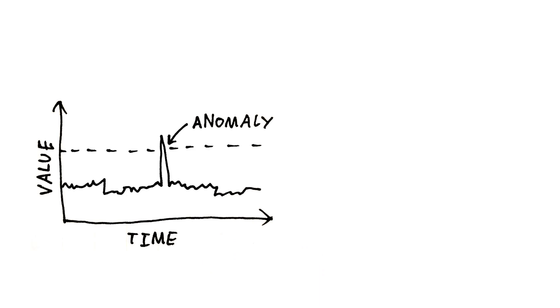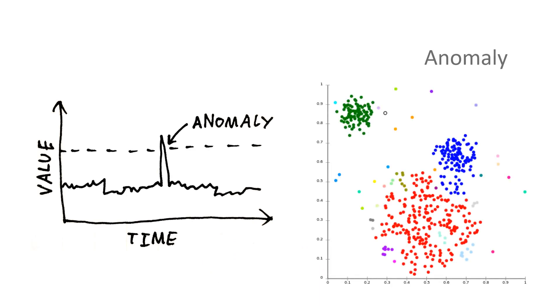What are anomalies? Anomalies are data instances that deviate significantly from the majority of data instances.